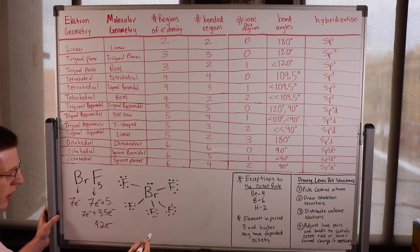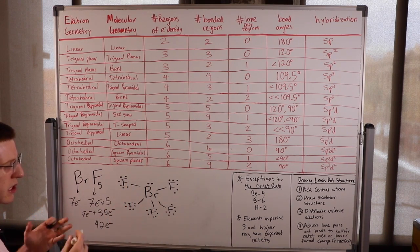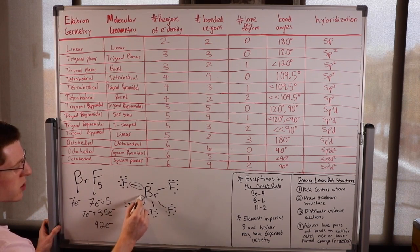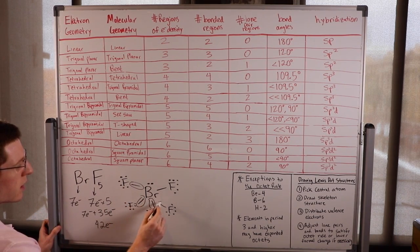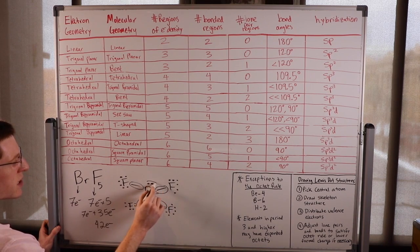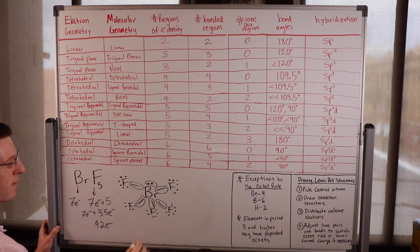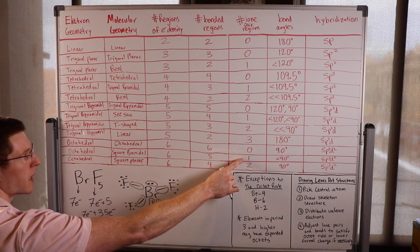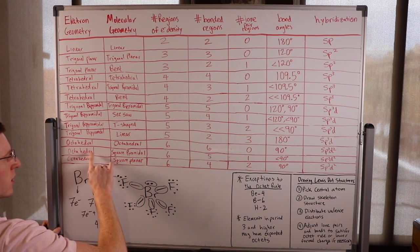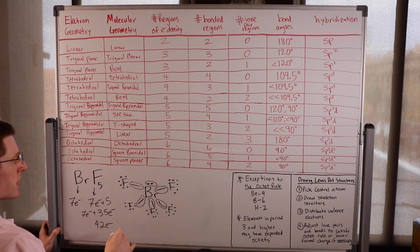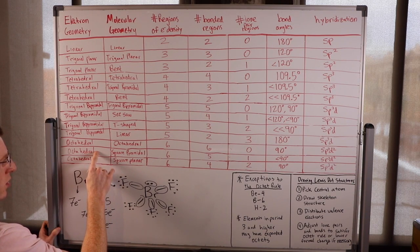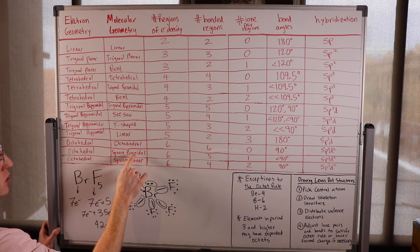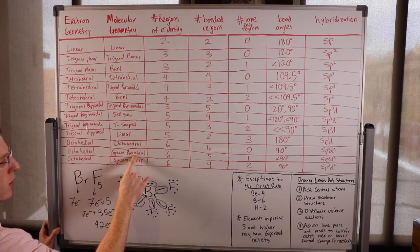We've used 42 electrons and this is our completed Lewis dot structure. We have six regions of electron density: five bonded regions and one lone pair region. The electron geometry is octahedral; however, the molecular geometry — its actual shape — is square pyramidal.